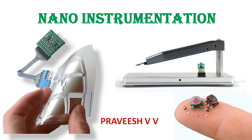Hi and welcome to the new video on industrial instrumentation and automation. This will be the last lecture in Module 2, and in this I'll be giving a brief introduction into nano instrumentation. Nano instrumentation — nano meaning a minute size of 10 to the power of minus 9 — covers instrumentation at nano levels.